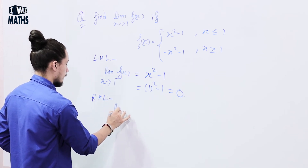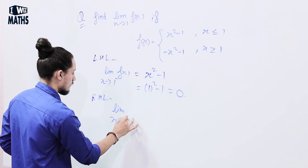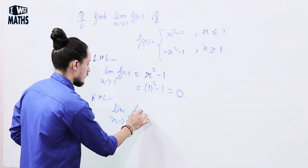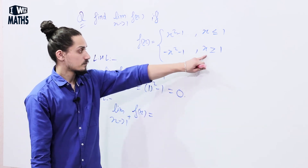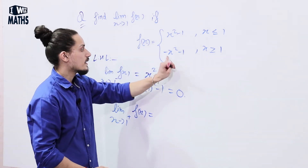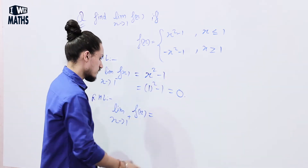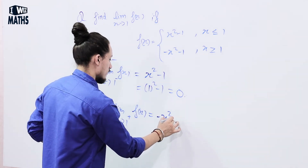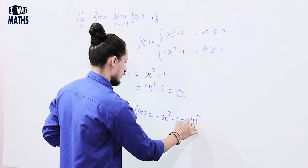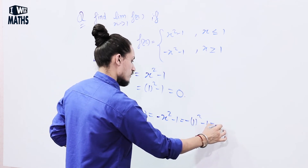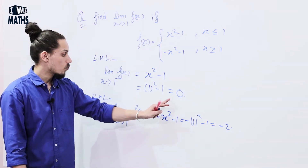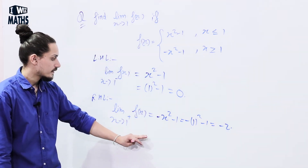Right hand limit: lim (x → 1⁺) f(x). Since x is approaching from the right, x > 1, so we use -x² - 1. Putting x = 1: -(1²) - 1 = -1 - 1 = -2.